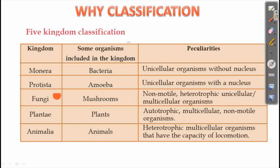The five kingdoms are: Monera, Protista, Fungi, Plantae, and Animalia. This is the five kingdom classification, and this classification is very important.